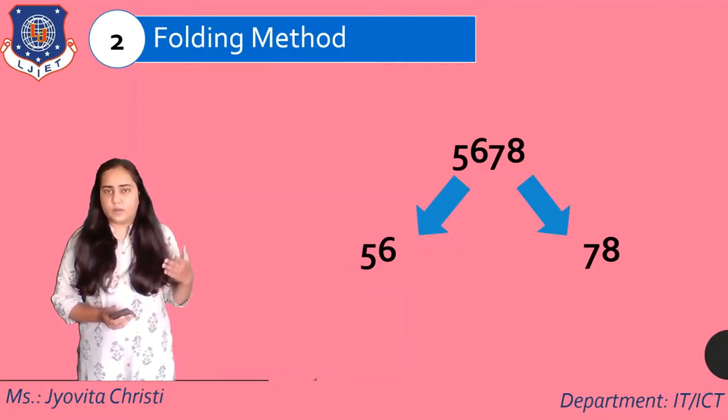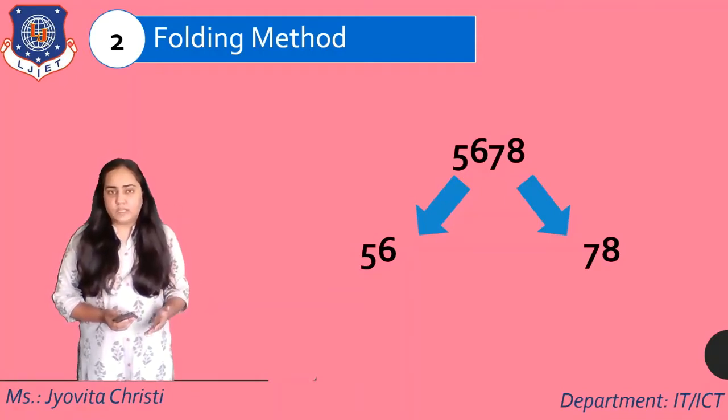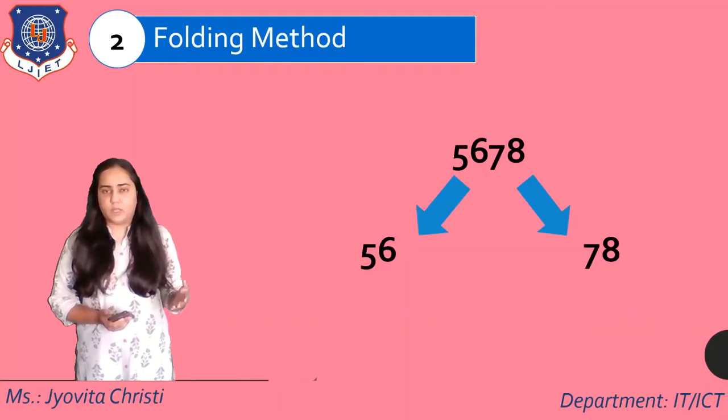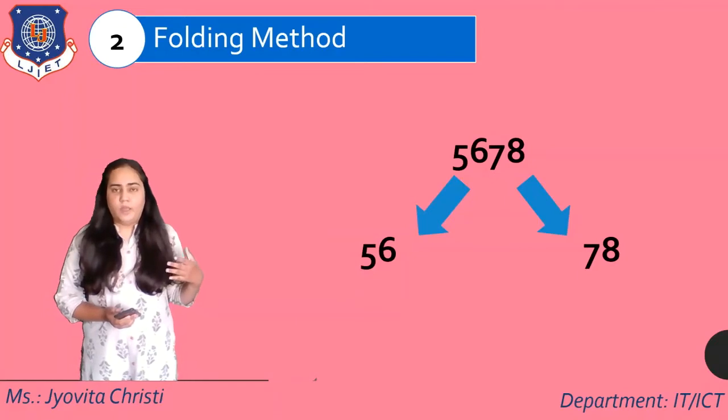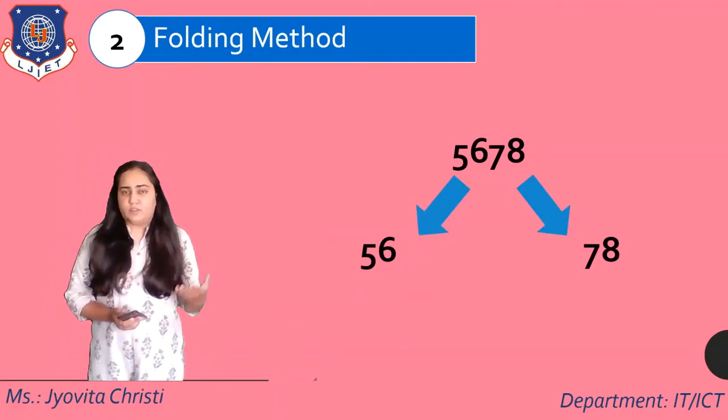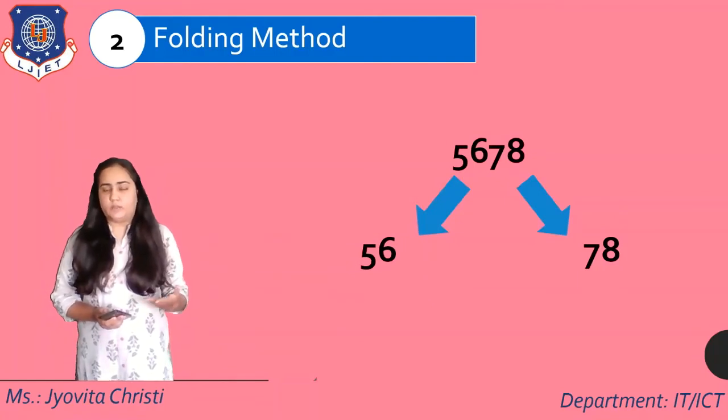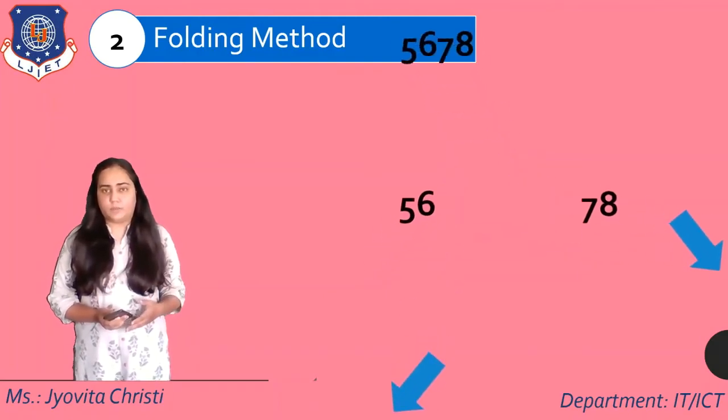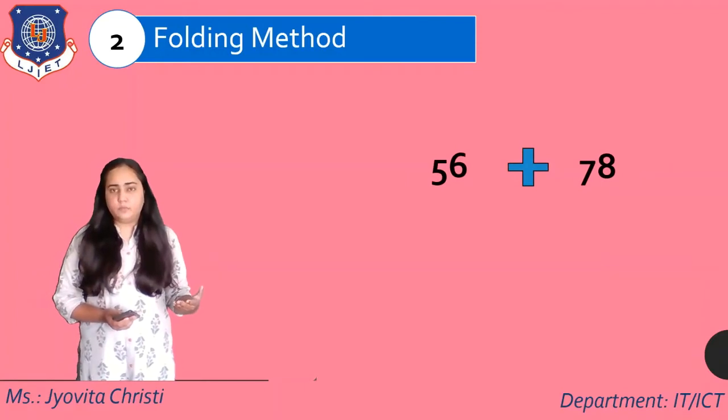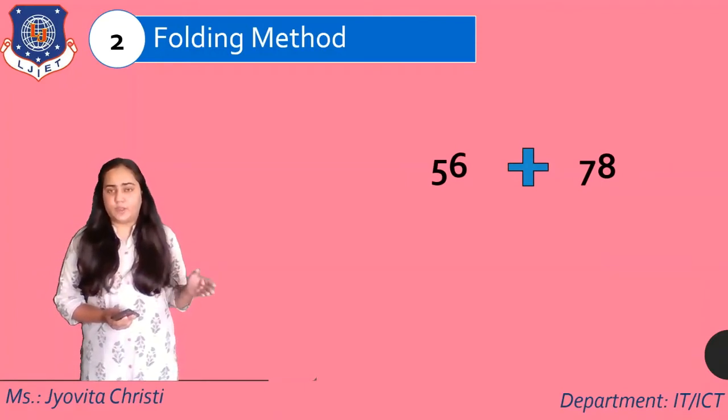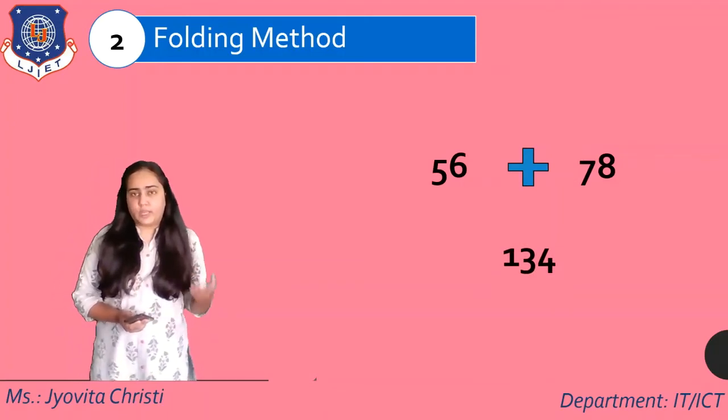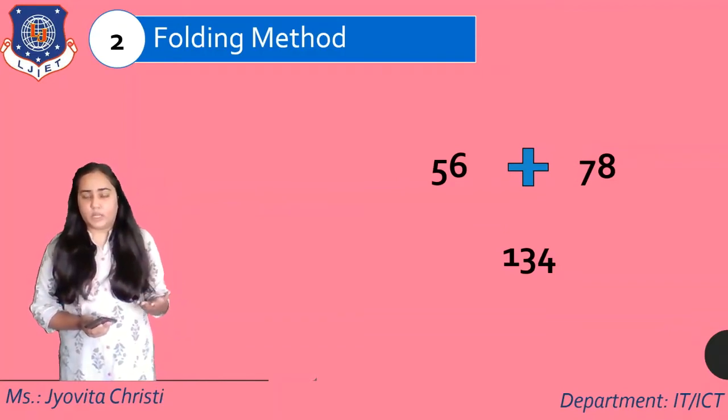And once you have divided it, but obviously you have to keep it uniform. If you have several keys coming to you, you have to keep the dividing of the parts uniform. You cannot just go about dividing any way you like. If you have decided to keep in the first part more digits than in the second part, then that has to be followed throughout the course of creating the hash table. Now, once these parts are ready, you're going to add the two parts. So we're going to add 56 and 78, which gives us 134. And 134 is the place where the bucket index where you will store the key 5678.